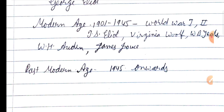After 1945, whatever literature was written is known as the Post-Modern age, from 1945 onwards. That's all for today. We will discuss all the ages in more detail in further videos. Please like, share, and subscribe to the channel. Thank you so much.